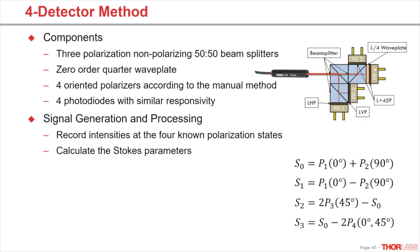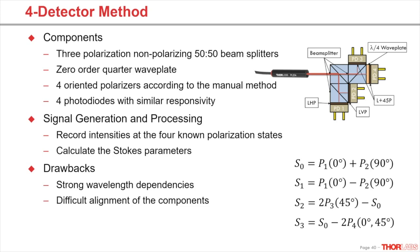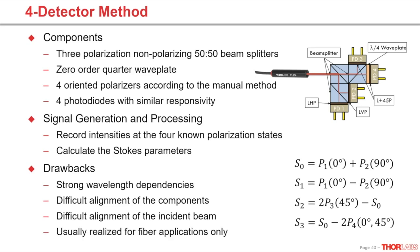While this method is very fast, it has some drawbacks. There is a strong wavelength dependence given by the number of lined-up components. The alignment of these components must be very accurate, and it is crucial that the incoming beam is aligned in a perfect way. This method is mainly used for fiber-based measurements with a well-defined coupling.